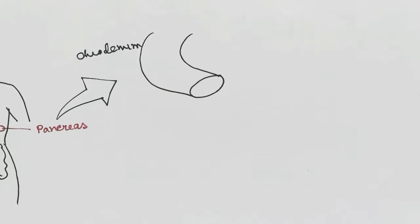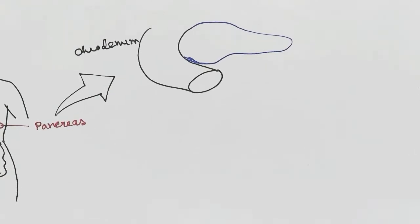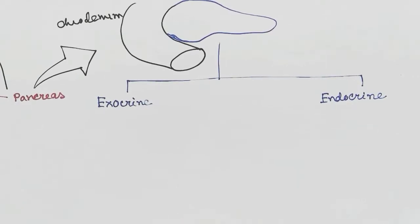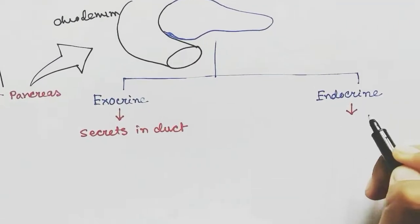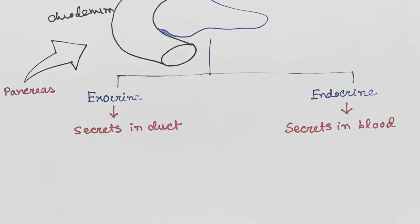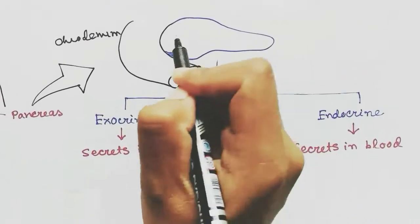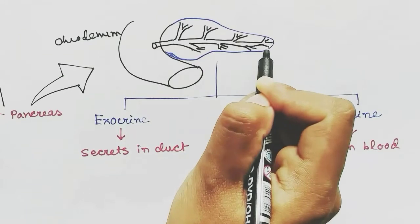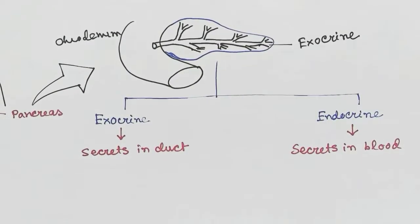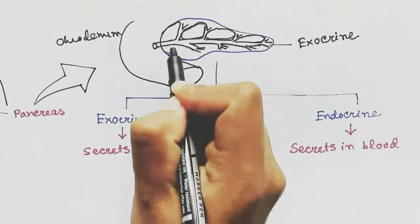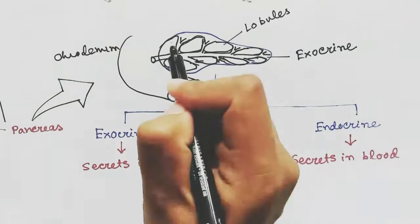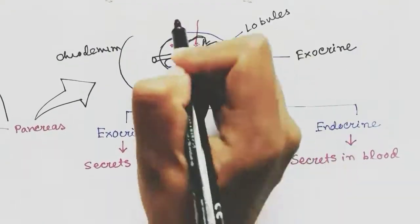The pancreas is present as the C-curve of the duodenum. The pancreas is both an exocrine and endocrine gland. Exocrine means it secretes into ducts, and endocrine means it secretes into the blood. The exocrine part is constituted of ducts, which also form sections of the pancreas called lobules. The endocrine parts remain within the exocrine part in the lobules, as islet-like structures.